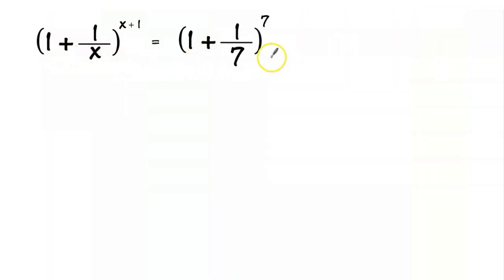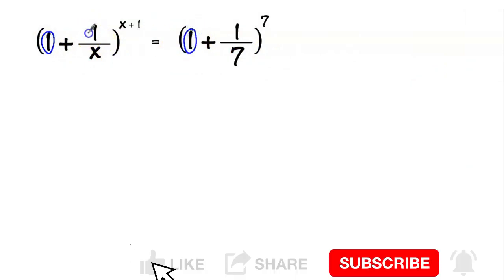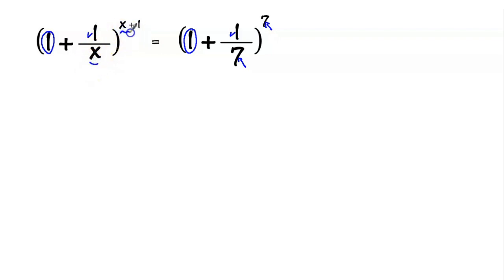First, let's compare the two sides of the equation. So here we have 1 and 1 here, same numerator. To the right hand side, the denominator and the power are the same, 7. However, to the left hand side, we have the denominator x, different from the power x plus 1.